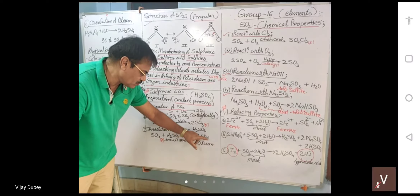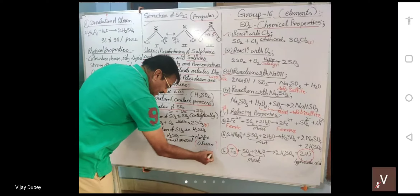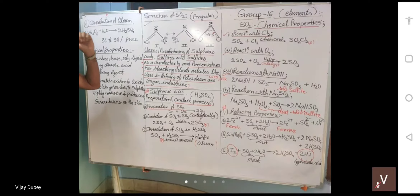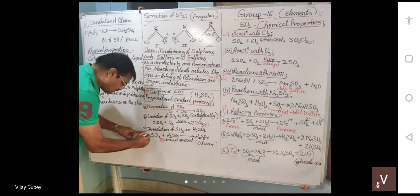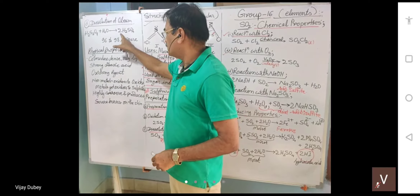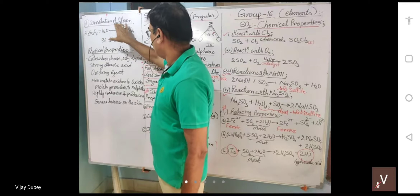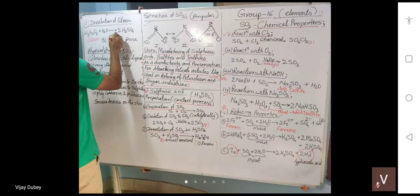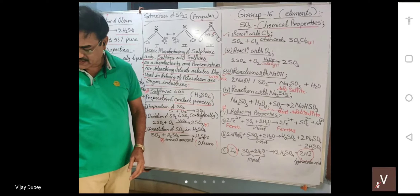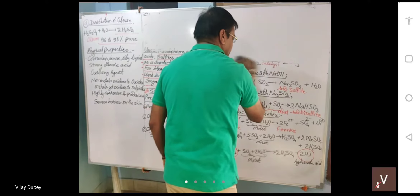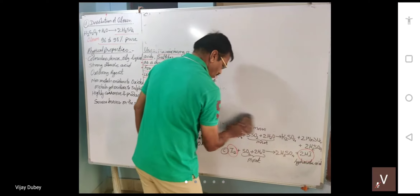Oleum is H2S2O7, also known as highly concentrated sulfuric acid. After dissolving SO3 in a small amount of H2SO4 to get oleum, that oleum is dissolved in water in step four to give two moles of sulfuric acid. The sulfuric acid obtained is almost 96–98% pure.